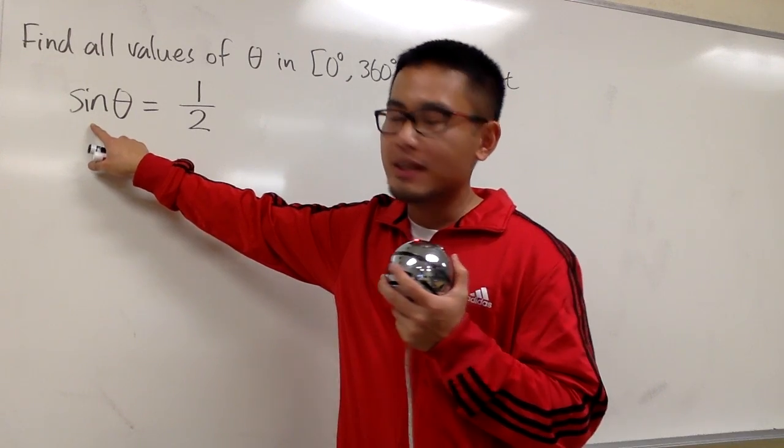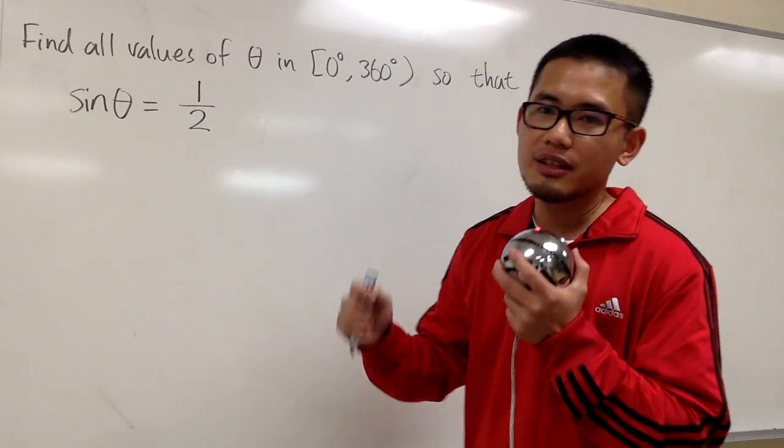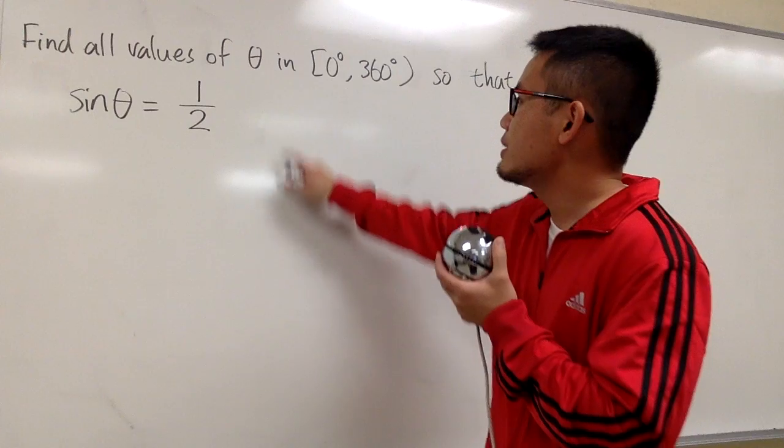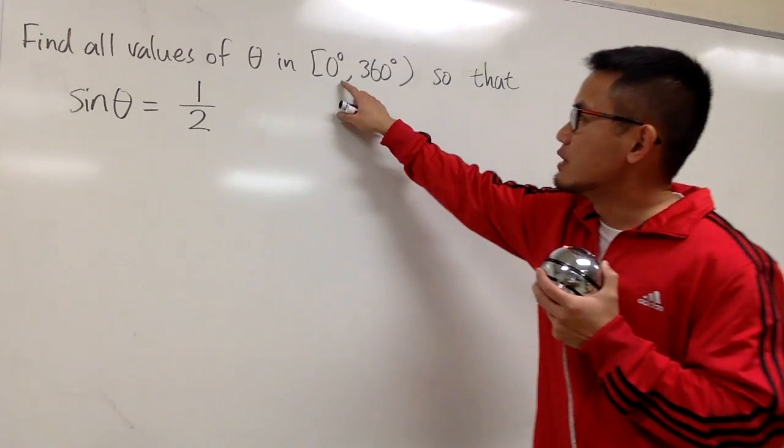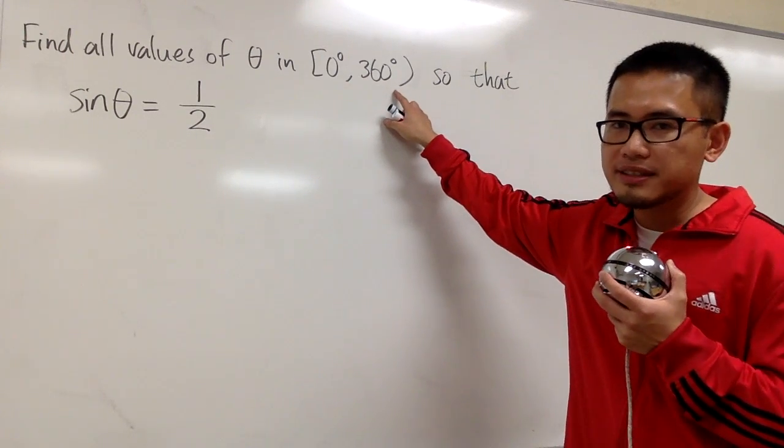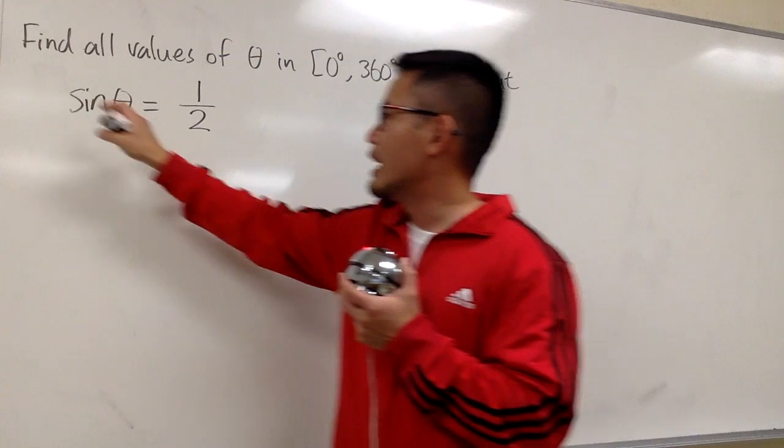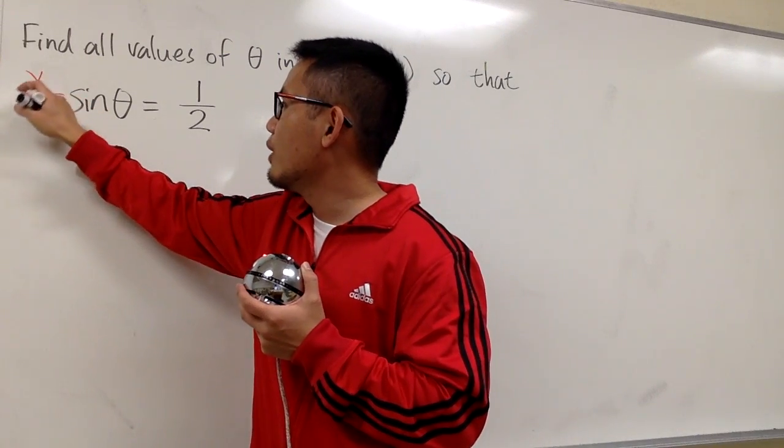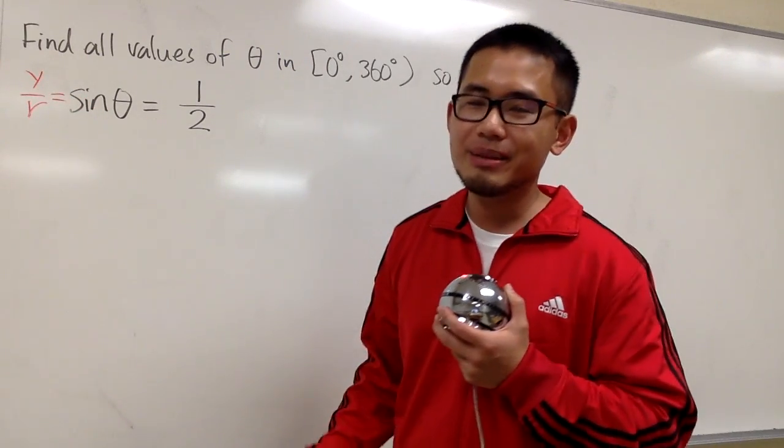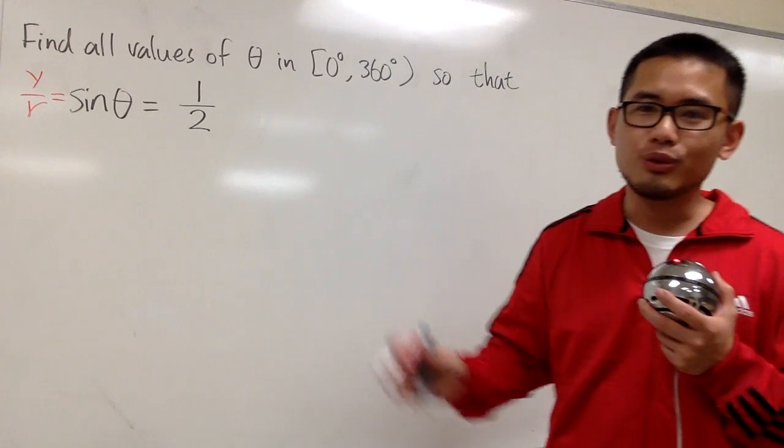We're talking about sine, and the usual definition of sine is opposite over hypotenuse. But since theta is going from 0 to 360 degrees, I'm going to use the y over r definition for that, because I have to go through the whole revolution.